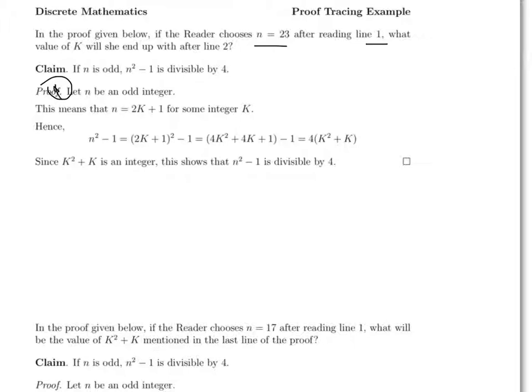Line 1 of the proof says let an odd integer be given and call it n. And so what I'm telling you to do here is let n equal 23 as if you're the person reading the proof and trying to follow the directions.